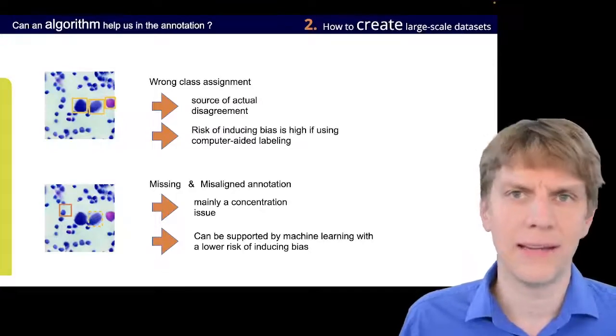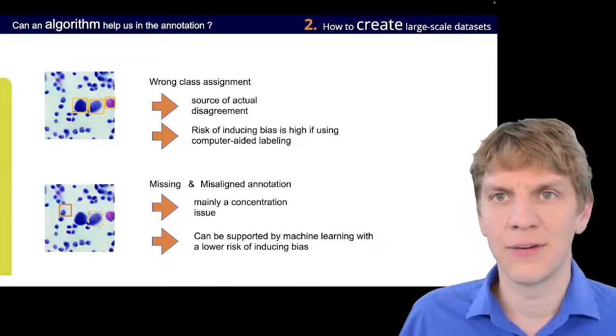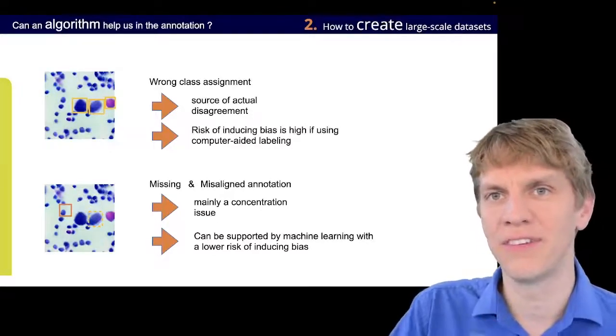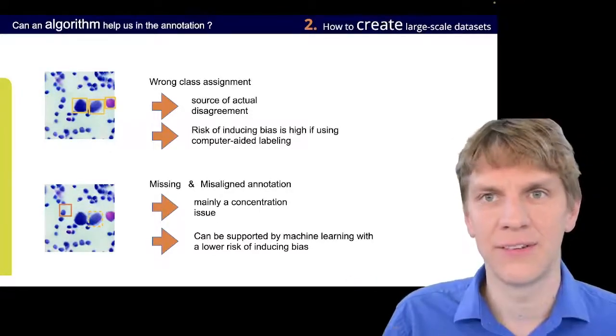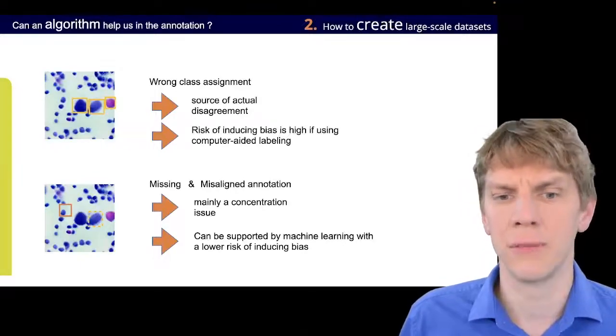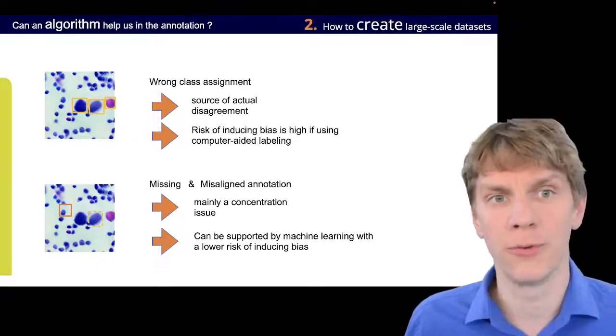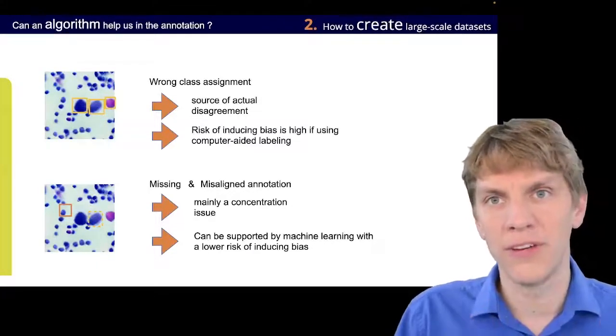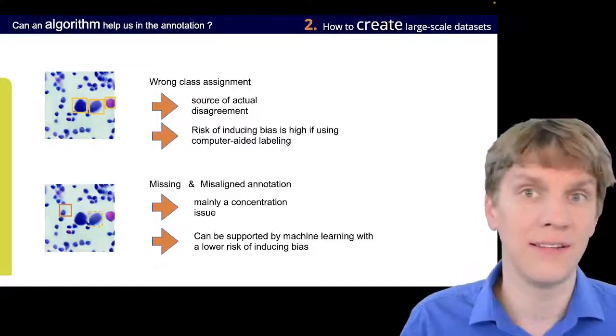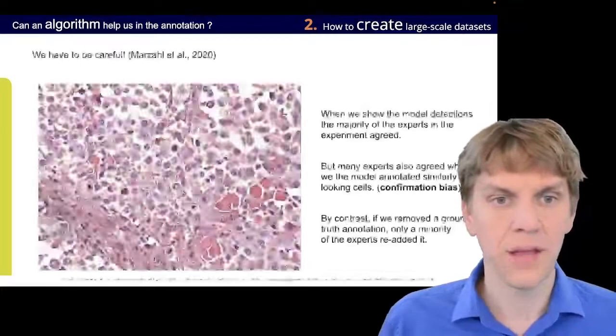So, this is something that you can clearly, when you revisit those annotations, see that there is an error in there. So, this can be really supported by some machine learning algorithm, with an actual low risk of really inducing a bias here. Because if we were to predict, like, a wrong box here that is not fitting, then this is really easy to detect for the human annotator.